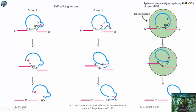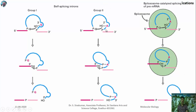In group 2 splicing, instead of an external guanosine, an adenosine residue present within the intron is used. This internal adenosine is attached to the 5' end of the intron, forming a lariat-like structure. The 3' end of the upstream exon is then joined to the 5' end of the downstream exon, the introns are released as a lariat — similar to mRNA splicing — and the exons are combined.